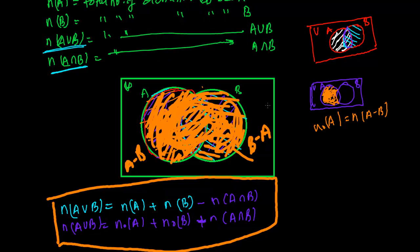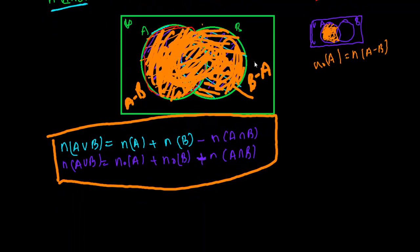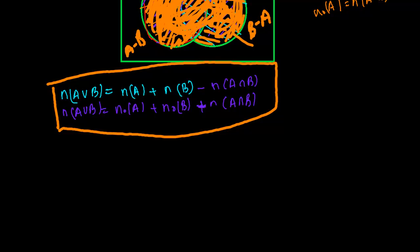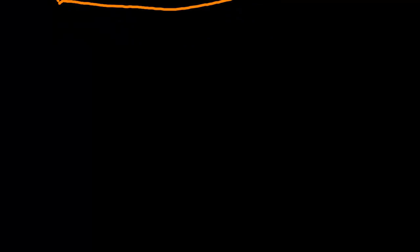I hope you understand this. Based on this you will have to solve many types of problems. One more thing: this formula is for the intersecting type of sets. If A and B are disjoint sets — disjoint means there is no common element between them — then the formula simplifies.